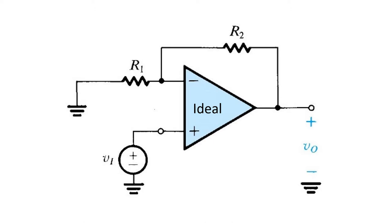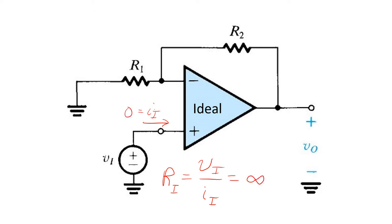Remembering that this is an ideal op-amp, we'll recognize that there's zero input current drawn from the source. Therefore, the input resistance of this configuration is the ratio of the input voltage source and input current. And since input current is zero, we've got infinite input resistance. This is in contrast to the inverting configuration where the input resistance is determined by one of the resistor values connected in the configuration.